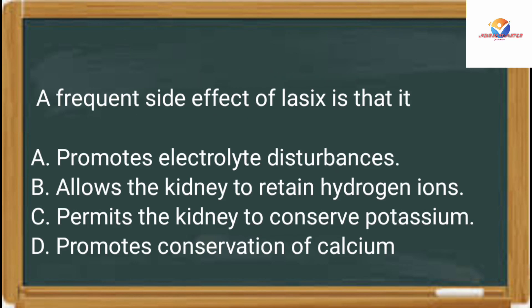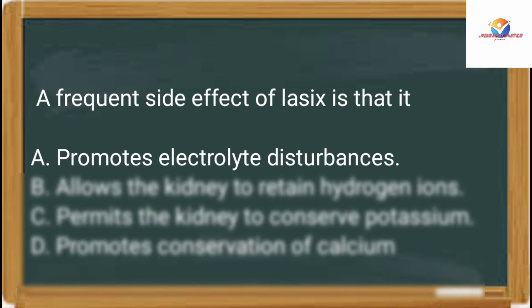A frequent side effect of Lasix is that it: Option A: promotes electrolyte disturbance. Option B: allows the kidney to retain hydrogen ions. Option C: permits the kidney to conserve potassium. Option D: promotes conservation of calcium. The correct answer is option A, promotes electrolyte disturbances.